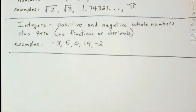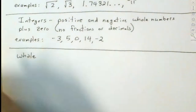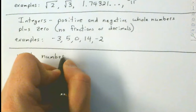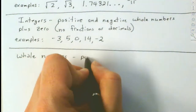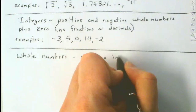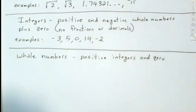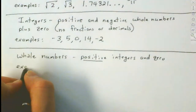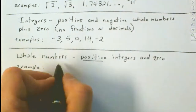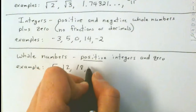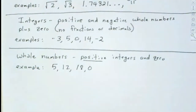The integers we can then break down into whole numbers. Whole numbers are just positive integers and zero — no fractions, no decimals, and they all have to either be positive or zero. Some examples of whole numbers: 5, 12, 18, zero, and there are lots of others too. Whole numbers must be positive or zero, no fractions and no decimals at all.